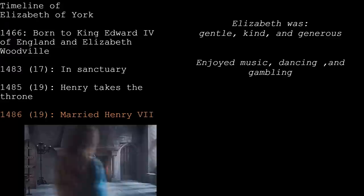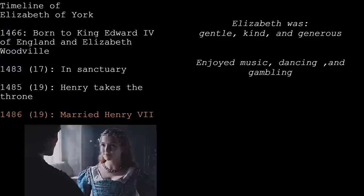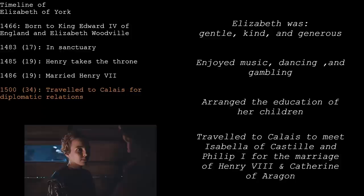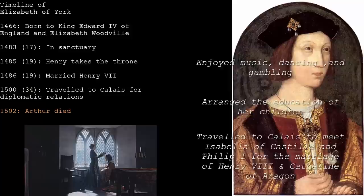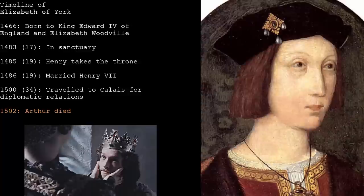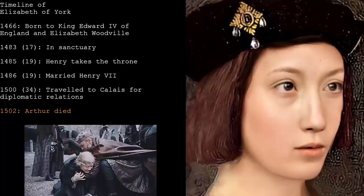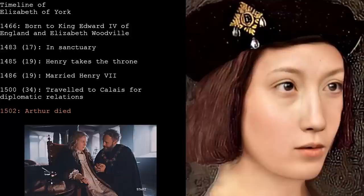One report states that Henry the Seventh chose to appoint Elizabeth's choice for a vacant bishopric over his mother's choice, showing his affection for and willingness to listen to Elizabeth. She seems to have had a love of books, patronizing the English printer William Caxton. Elizabeth of York enjoyed music, dancing, and gambling — the last of these a pastime she shared with her husband. As queen, she made arrangements for the education of her younger children including the future Henry the Eighth, and accompanied her husband on his diplomatic visit to Calais in 1500 to meet Philip the First of Castile. Their eldest, Arthur, died in April 1502.